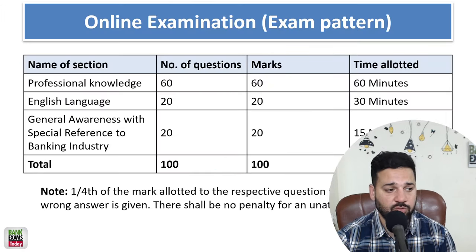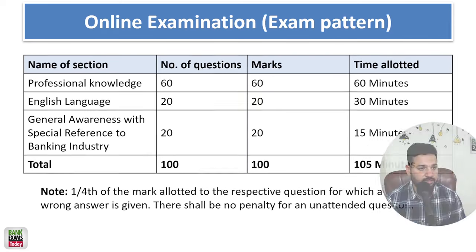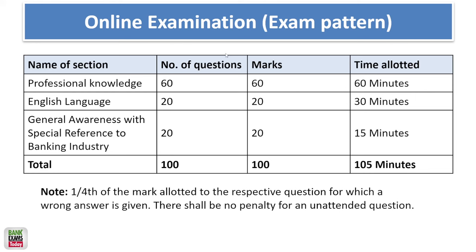This is the exam pattern. For Professional Knowledge: 60 questions, 60 marks. For English Language: 20 questions, 20 marks. For General Awareness: 20 questions, 20 marks. Total: 100 questions and 100 marks. Sectional timing applies — 60 minutes allotted to Professional Knowledge, 30 minutes to English Language, and 15 minutes to General Awareness. Total time allotted is 105 minutes with sectional timing.